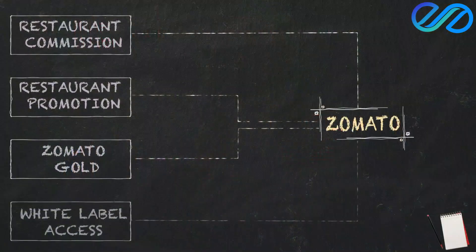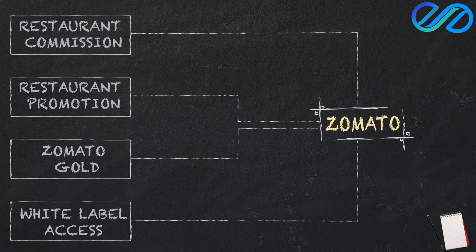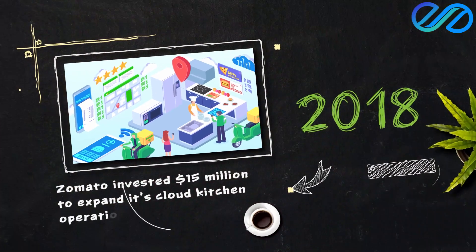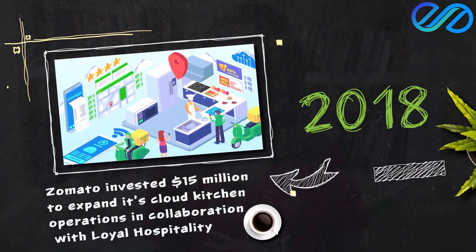Regarding another revenue source — White Label Access. What is that? If you have a brand, you can access a white label through Zomato. If you have a small-scale cloud kitchen, you can access Zomato's white label. If you are interested in running a cloud kitchen or a full restaurant, you can follow a kitchen with FSSAI rules, and then you can deliver online through Zomato.